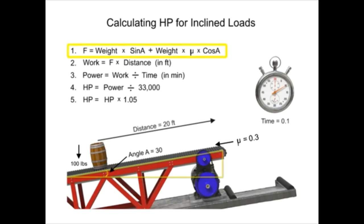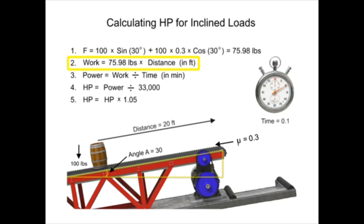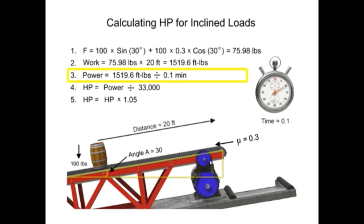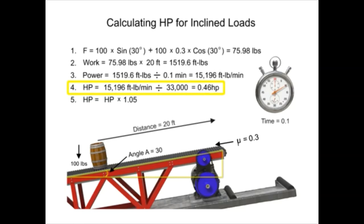First, find the horizontal force required by adding the force required to raise the load to a higher elevation with the force required to overcome the friction. In this system, the horizontal force is 75.98 pounds. Then, determine the amount of work required by multiplying the force by the distance of 20 feet — the work required is 1,519.6 foot-pounds. Next, calculate the power by taking the work and dividing by the time of 0.1 minutes — the power is equal to 15,196 foot-pounds per minute. Then, convert to horsepower by dividing by 33,000, yielding 0.46 horsepower. Finally, add 5% for estimated friction losses — the final result is 0.48 horsepower. With this result, system designers can ensure the right size motor is available to operate the conveyor on an incline.